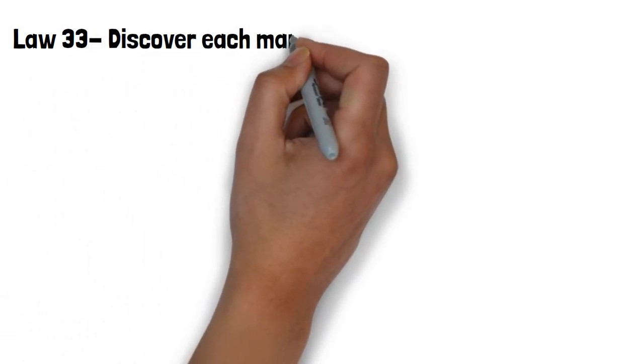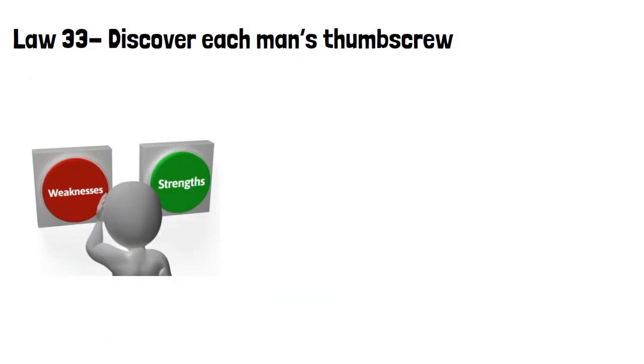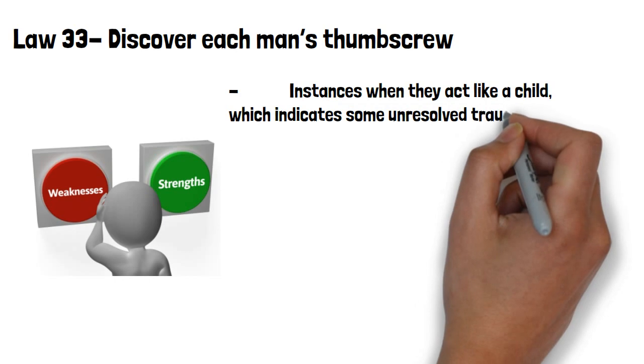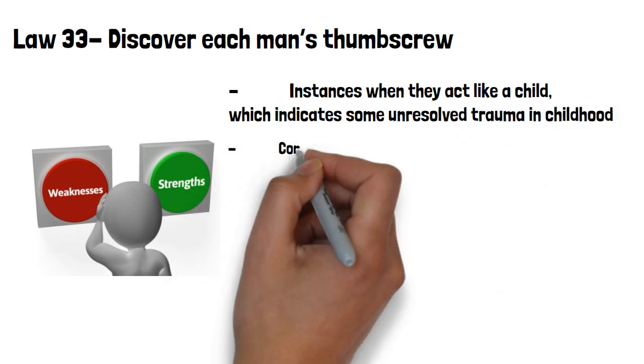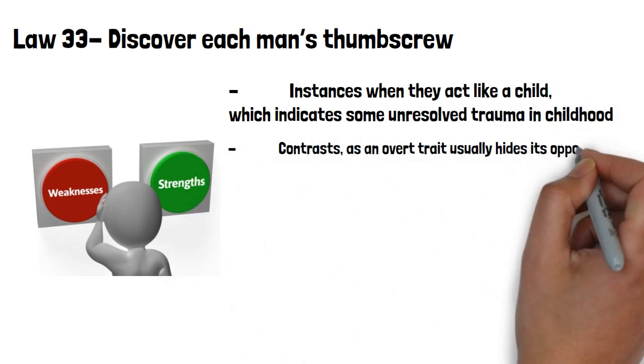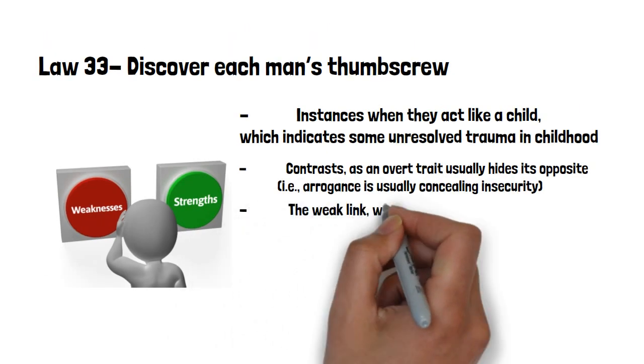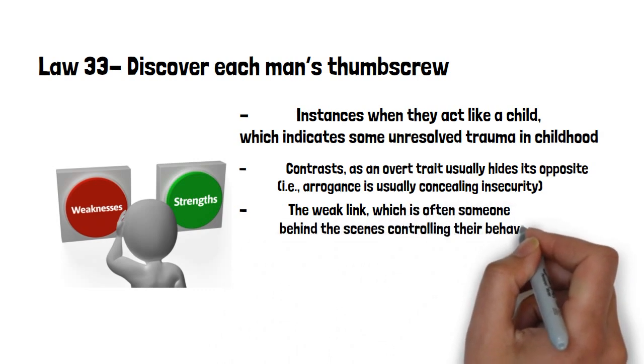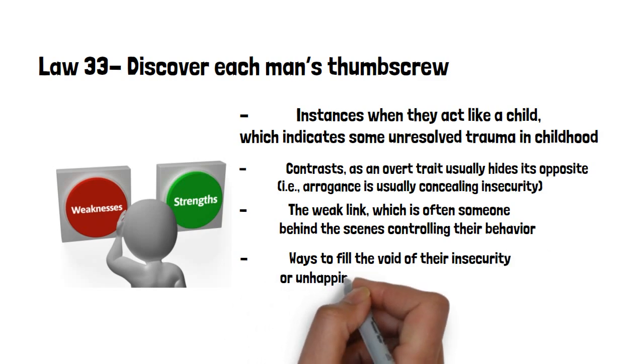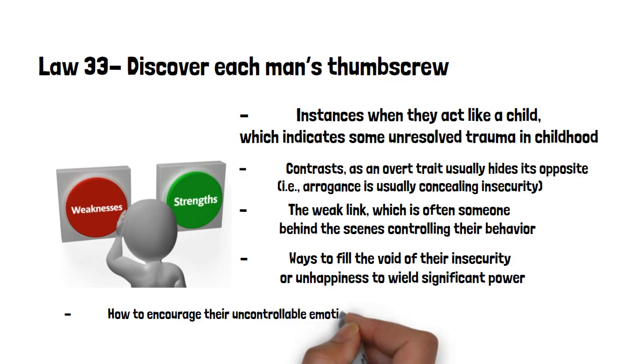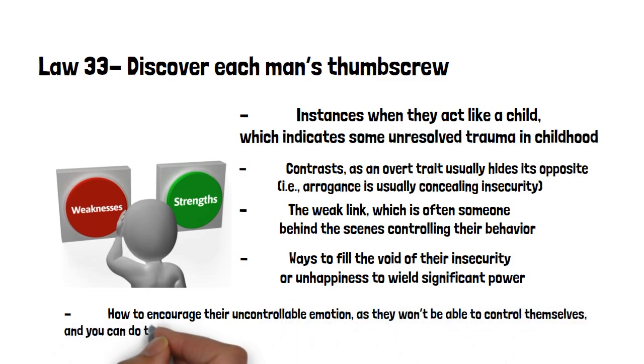Law 33, discover each man's thumbscrew. Find people's weaknesses. This is usually an insecurity, an uncontrolled desire or emotion, or sometimes a secret pleasure. To do this, look for the following. Instances when they act like a child, which indicates some unresolved trauma in childhood. Contrasts, as an overt trait usually hides its opposite, i.e. arrogance is usually concealing insecurity. The weakling, which is often someone behind the scenes controlling their behaviour. Ways to fill the void of their insecurity or happiness, to wield significant power. How to encourage their uncontrollable emotion, as they won't be able to control themselves, and you can do the controlling for them.